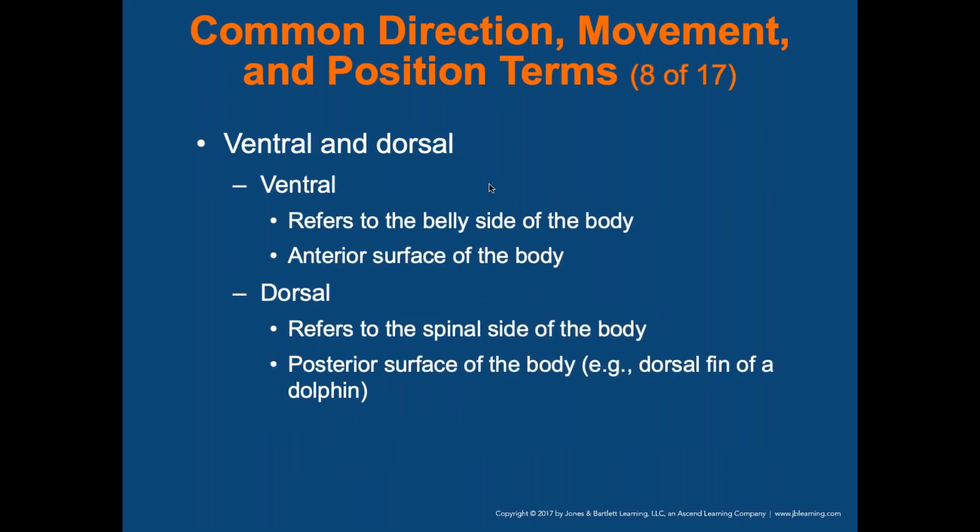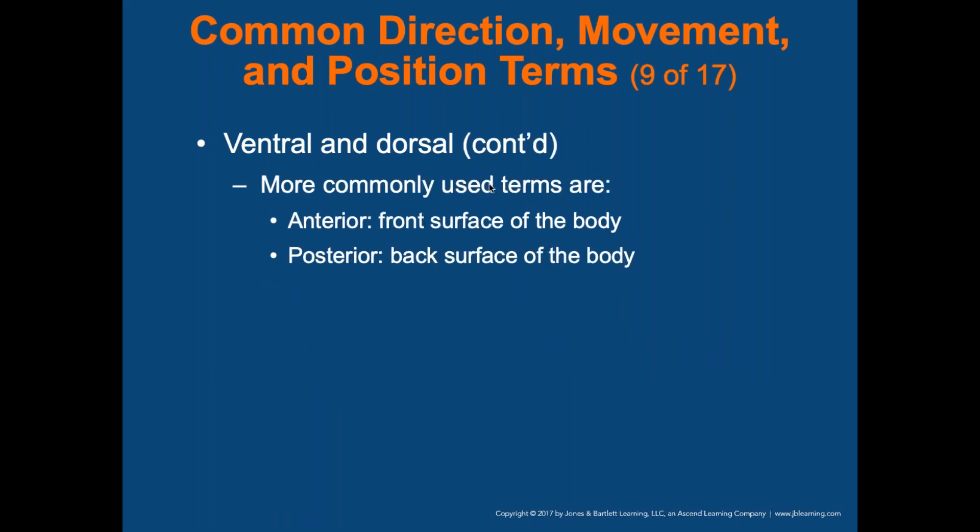Ventral refers to the belly side — the anterior surface — of the body. Dorsal refers to the spinal side — the posterior surface — like a dorsal fin on a dolphin. More commonly used terms are anterior and posterior: front side versus back side of the body.